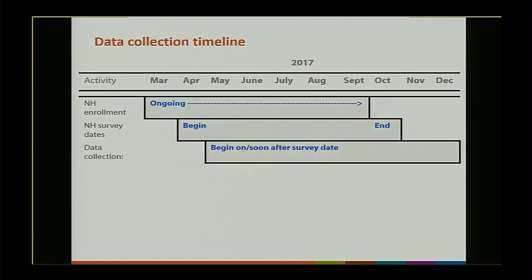This slide provides a graphic overview of the data collection for the entire project. Data collection occurred during 2017. Beginning in March, we started with nursing home enrollment — EIP staff contacted nursing homes within their geographic area, provided information about the project and how data would be used. The nursing home survey dates began in April and extended through October. Each nursing home had its own survey date, selected with the EIP site. Data collection ran through the end of December, with most collection done by EIP officers.